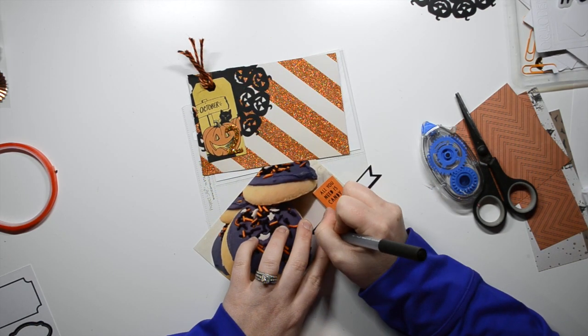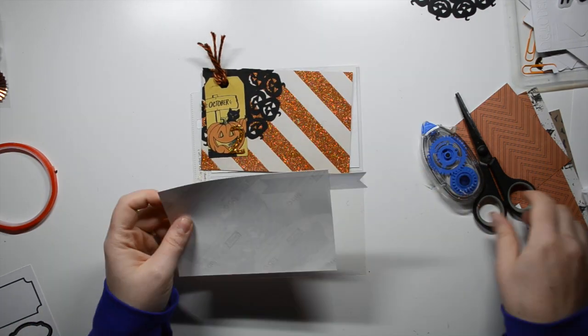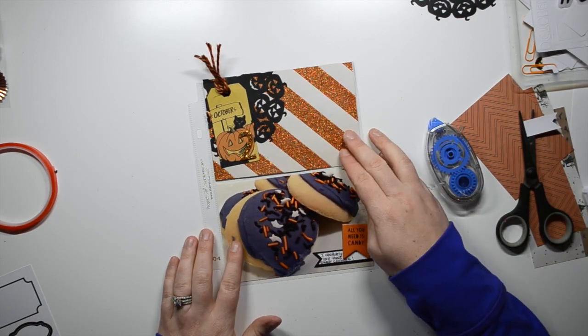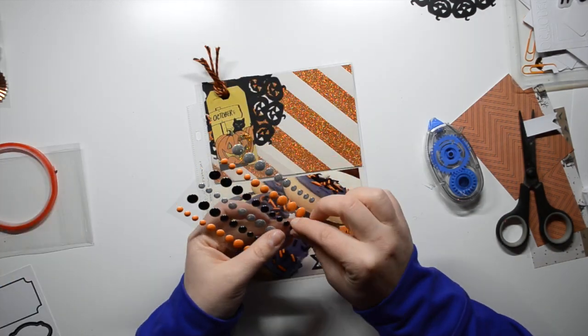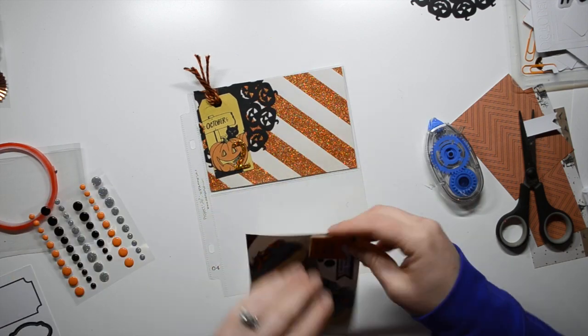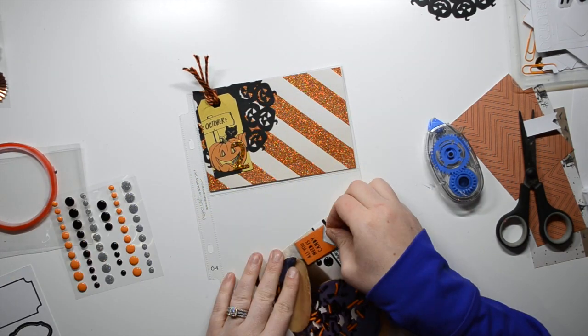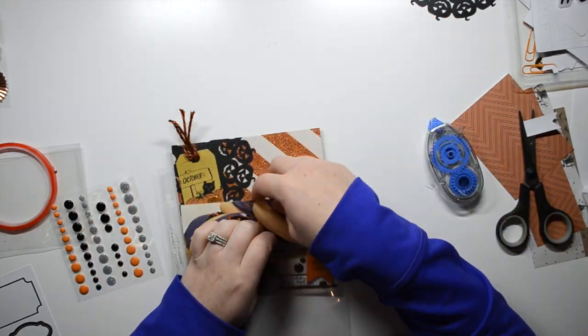Using a black flag label and a little chipboard piece that says, All I want is candy. Even though these are cookies, I thought it was applicable. And then just add some black enamel dots just to bring in some more black to the bottom picture. And that is day 2 done.